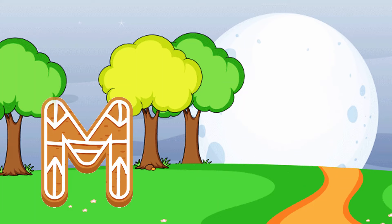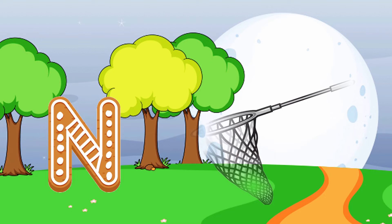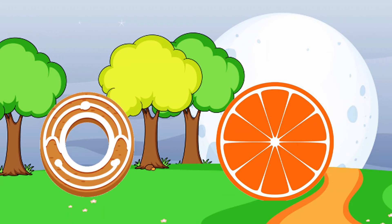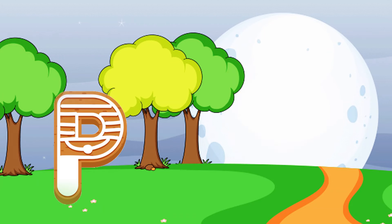M is for mat, m-m-mat. N is for net, n-n-net. O is for orange, o-o-orange. P is for pet, p-p-pet.